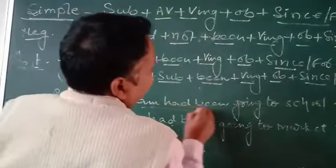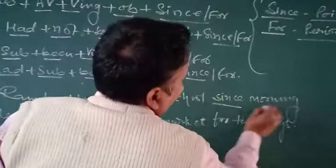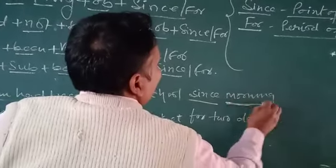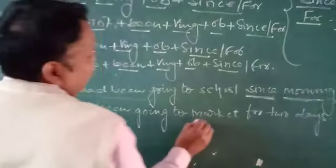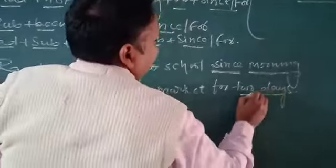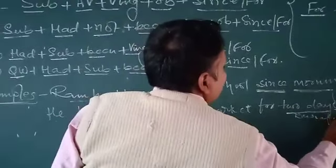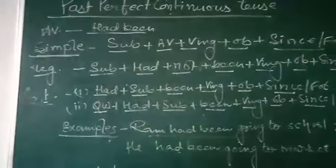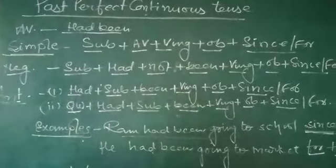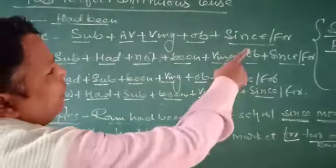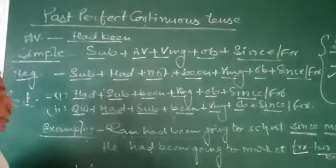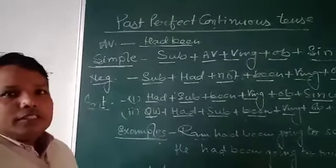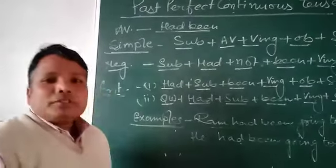For example: 'Ram had been going to his school since morning.' Here the time is indicated as 'morning,' so we use 'since.' Another example: 'He had been going to market for two hours.' Here there is a duration, so we use 'for.' Be careful: when a point of time is given, apply 'since,' and when a period of time is given, apply 'for.' In the next video I will explain about future tense. Keep watching, like and subscribe my channel. Thank you.